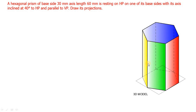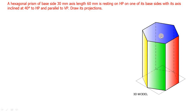You all know the nomenclatures of the hexagonal prism. Totally it will have two faces - top face and bottom face, which can be called as base. Totally 6 rectangular faces are there, 6 base edges, and also 6 top face edges. These can be called as longer edges. In this problem, we are going to rest this particular hexagonal prism on one of its base edges - 6 base edges are there - and we are going to tilt this prism 40 degrees to HP such that its axis will be 40 degrees to HP.